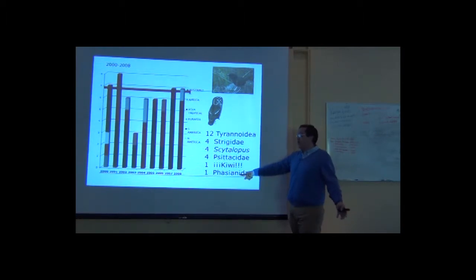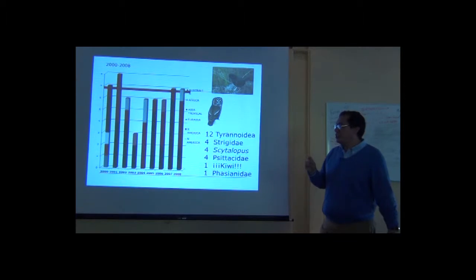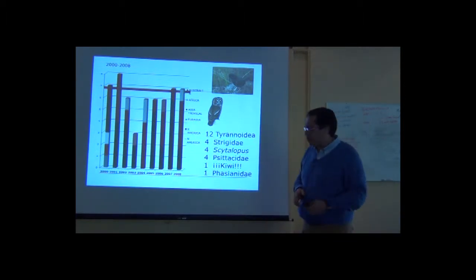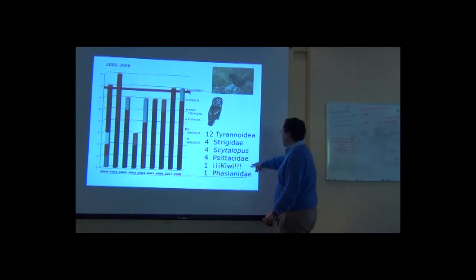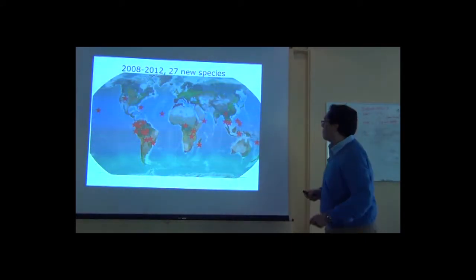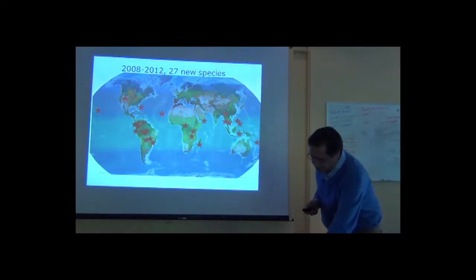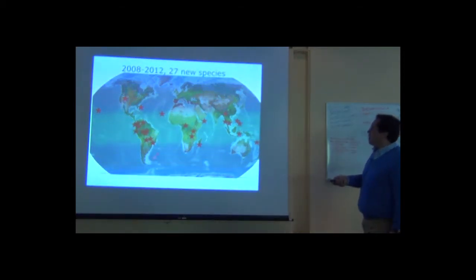From where? From the United States. That's the Gunnison prairie chicken. One kiwi, et cetera. And for the years 2008 to 2012, 27 new species. And most of them from the tropical regions.